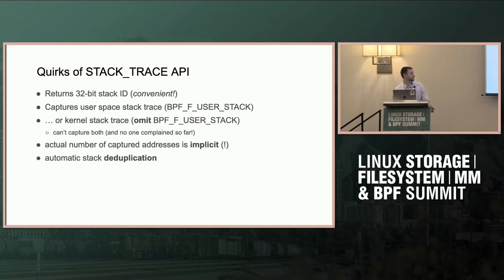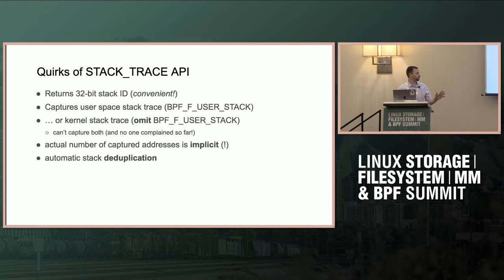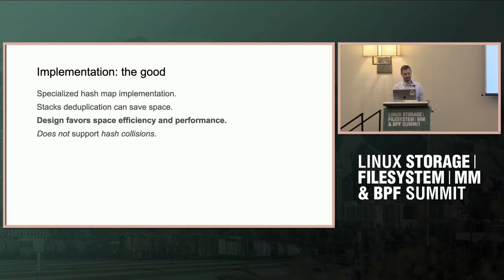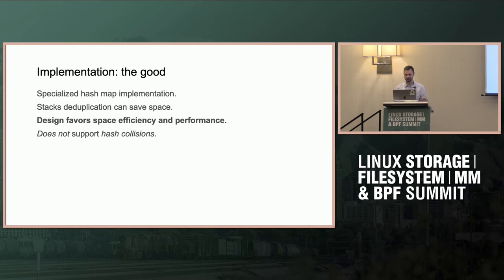Another super important aspect is automatic stack deduplication: if we capture a stack trace and we already captured the exact same stack trace before, the kernel will reuse the same slot and return the same ID. This has huge implications on everything. The good parts of this API are that we have a fast specialized hash map implementation for this map, and the deduplication saves space because some stacks will inevitably repeat. It's clear that the domain drivers were efficiency and performance.